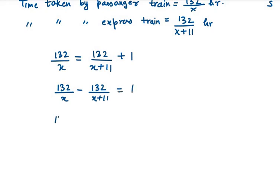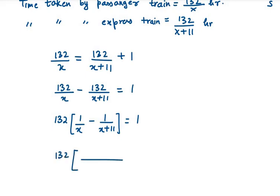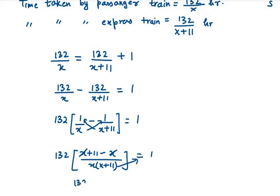Now we simplify: 132 times the bracket 1/x minus 1/(x+11) equals 1. We take LCM of x and x plus 11. After cancellation, x plus 11 goes to the right-hand side, giving us 132 times 11 equals x times (x plus 11).